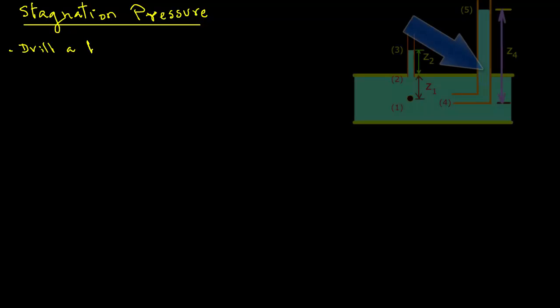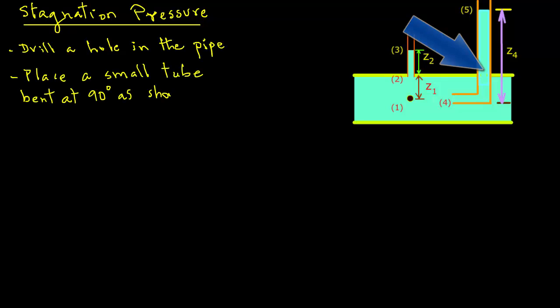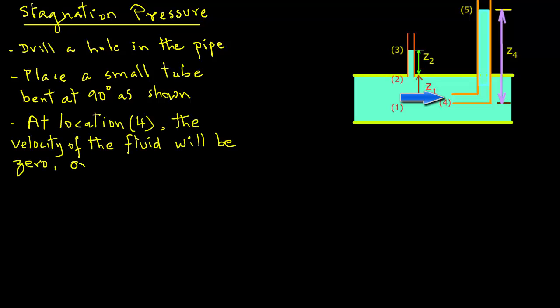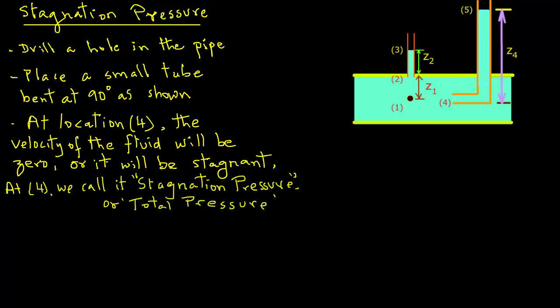Next, let's consider how we measure stagnation pressure, also called total pressure. We drill a small hole in the pipe and place a small tube bent at 90 degrees, as shown in the diagram. As fluid enters this tube, it rises to a certain height and comes to rest. At location 4, the velocity of the fluid is 0, since the fluid in the tube has come to rest — we call this stagnant. At location 4, the pressure is therefore called stagnation pressure and also total pressure.